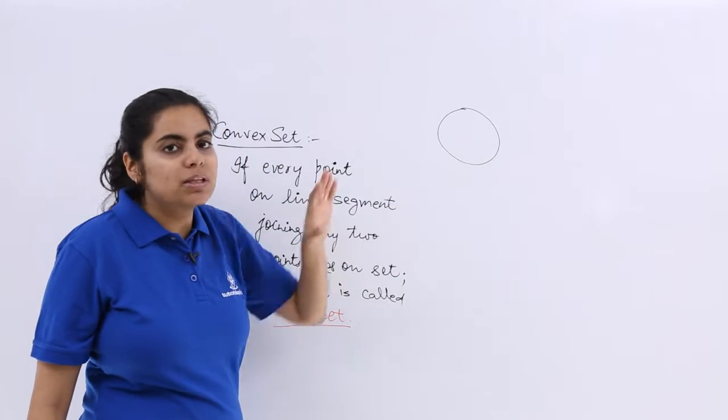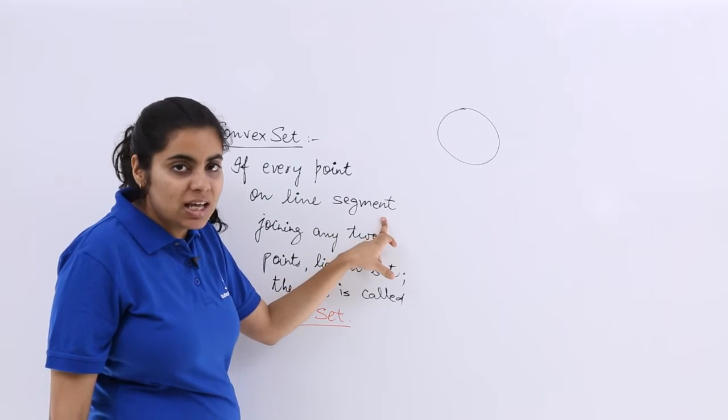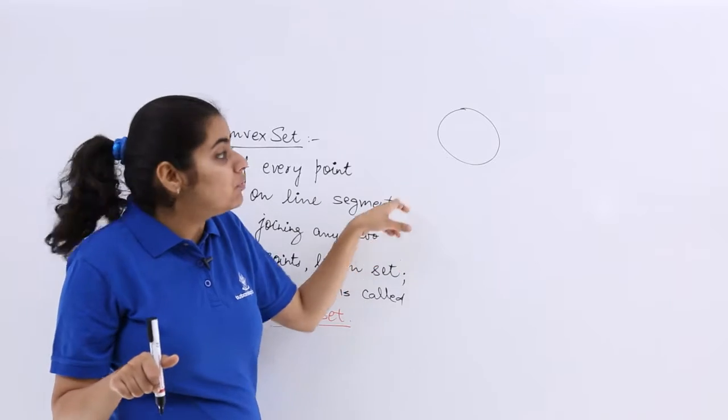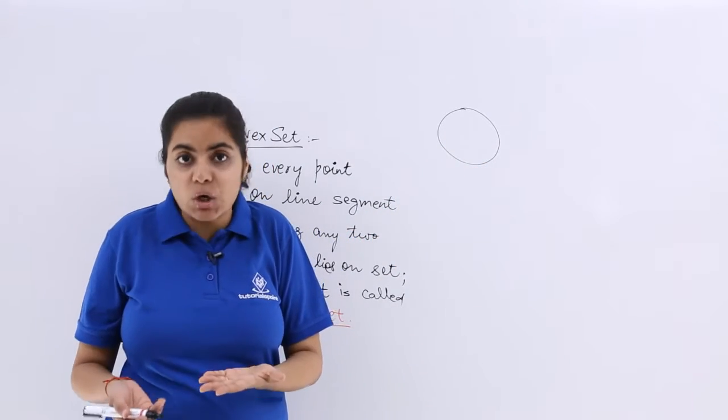Any two points within this diagram, when joined will give you a line segment. If that line segment lies in the set itself, it is called a convex set. Otherwise, it is not a convex set.